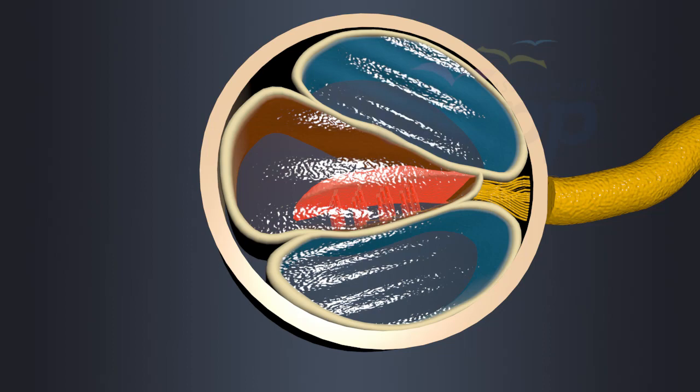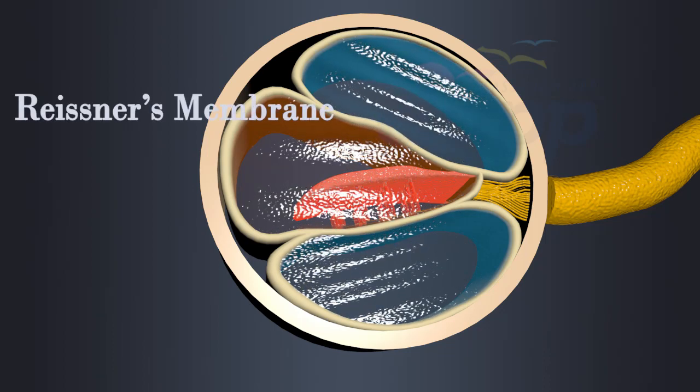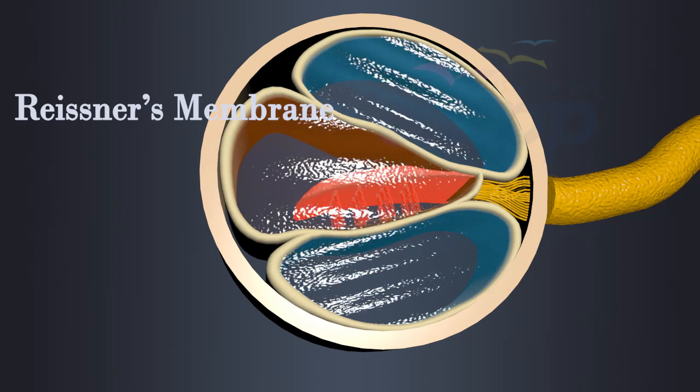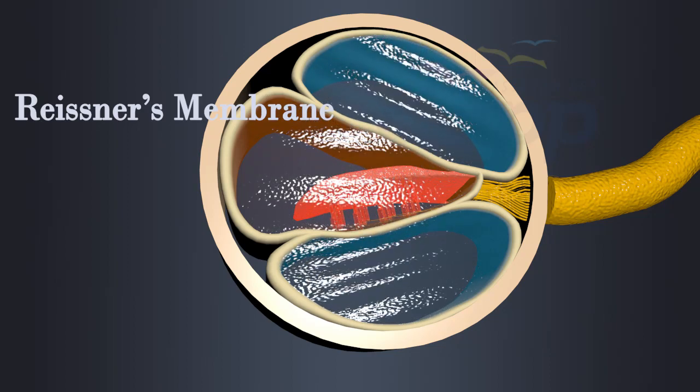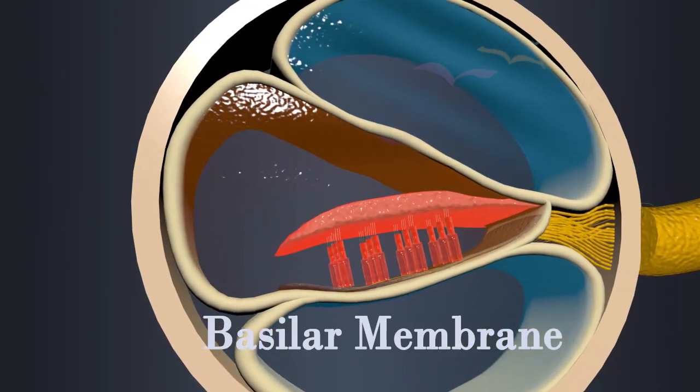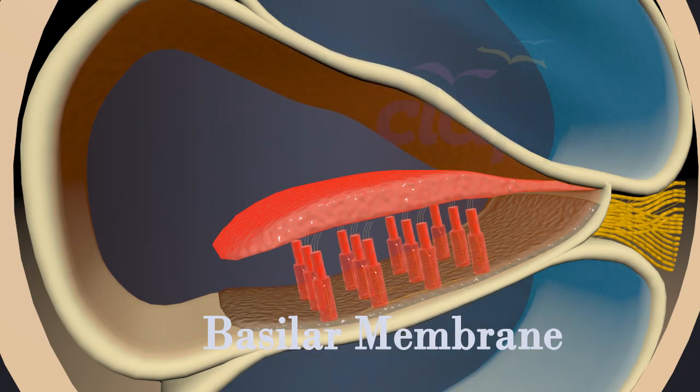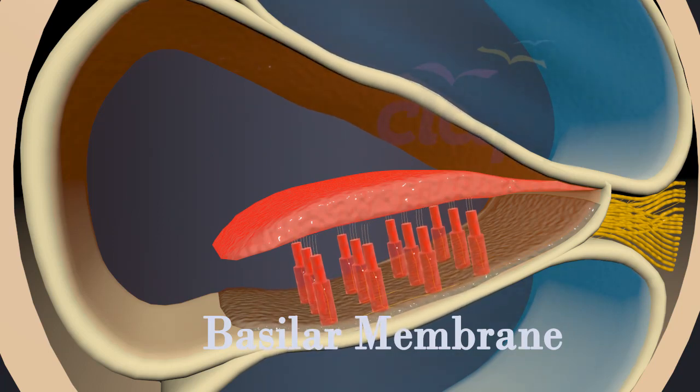The thin, flexible membrane that separates scala vestibule from cochlear duct is called Reissner's membrane. The flexible membrane structure located below cochlear duct is called basilar membrane.